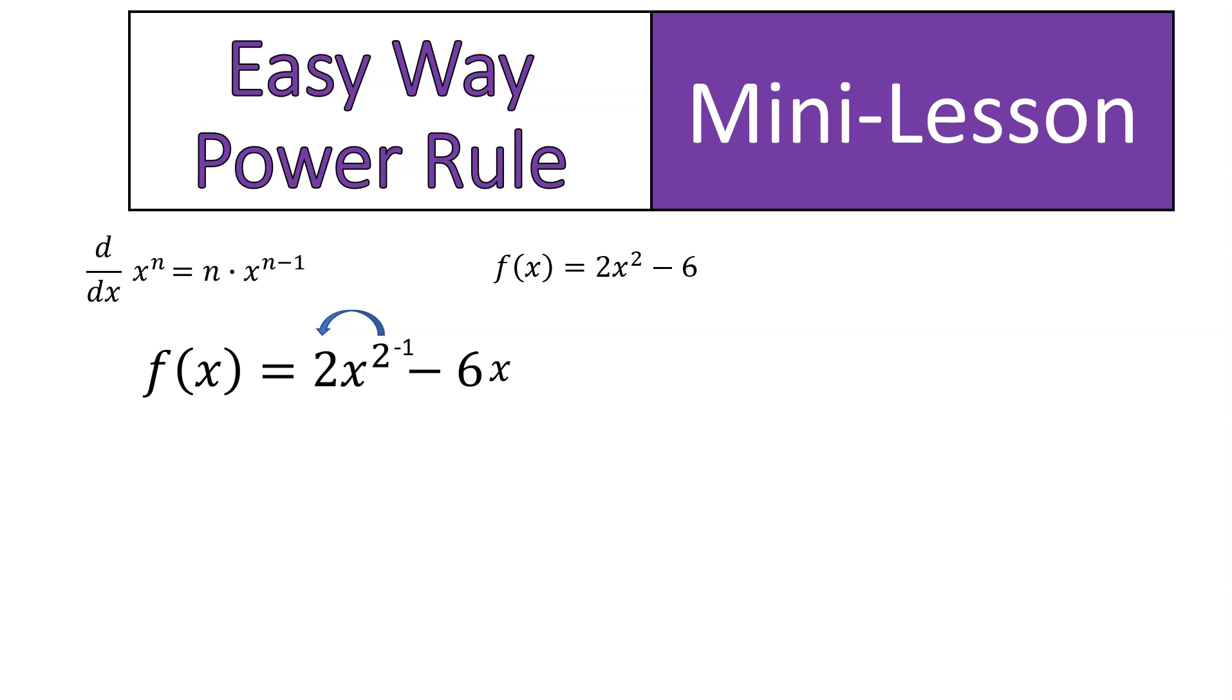On our second term, 6, we don't have an exponent there, or a variable. So what we're going to do is we're going to add a variable, x, to the power of 0. And x to the power of 0 means 1. So it's like, oh, 6 times 1 is 6. So we're not changing the value of that. We're just giving it an exponent and a variable so that I can show you why what's going to happen next will happen. We would multiply 0 times 6, and that gives us 0. So we would end up with 4x here and 0 there.